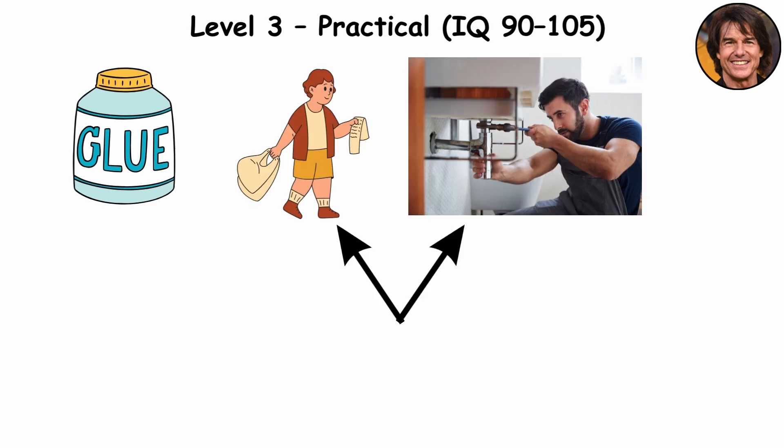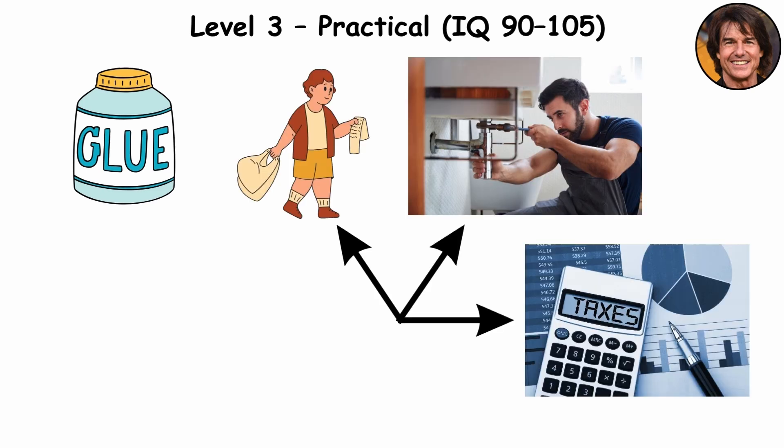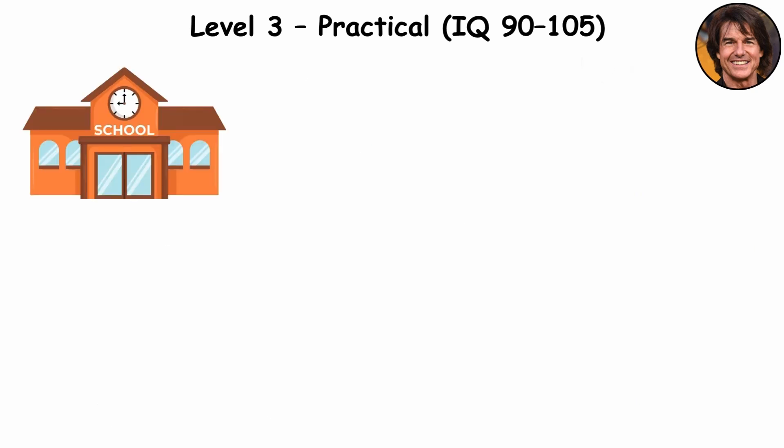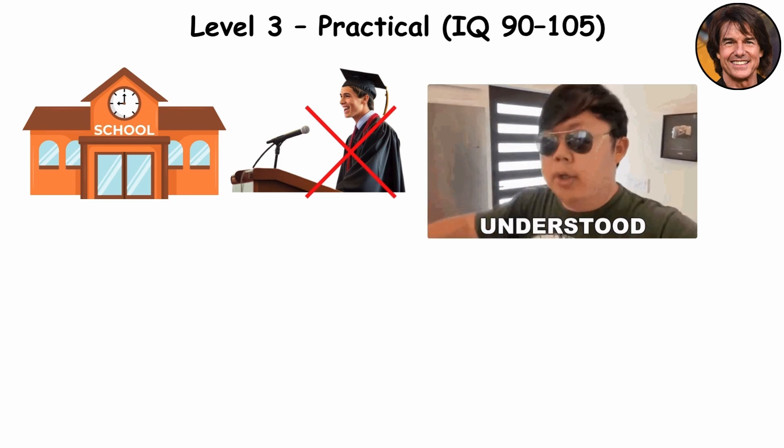People at this level are the glue of society. They run errands, fix leaky faucets, file taxes eventually, and somehow keep everyone else's chaos organized. In school, they did fine. Not valedictorian material, but they understood the assignment.